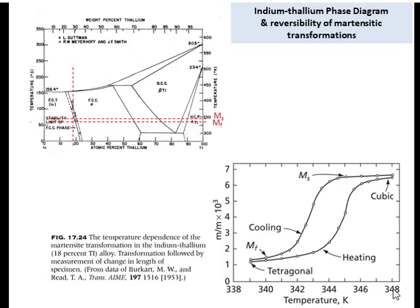On cooling from 348 K, the length of the specimen begins to change at approximately 345 K, signifying that the martensitic transformation started at this temperature. This temperature is designated Ms — the martensite start temperature — and it is customary in all martensitic transformations to use this notation. The curve also shows that the specimen did not transform completely until the temperature was lowered to about 340 K, marking the martensite finish.